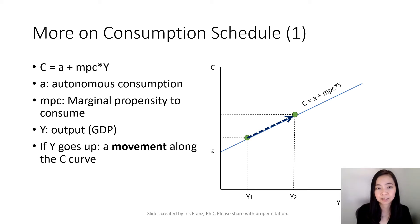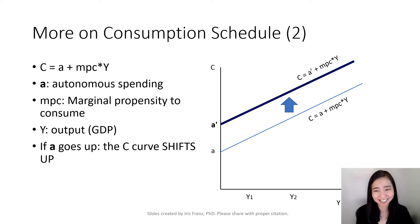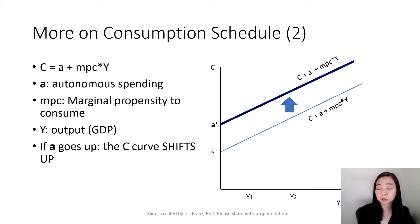So moving from, say, this point to that point, if our real GDP goes up. Suppose your autonomous spending goes up from A to A prime, where A prime is greater than A, then you are going to see a shift of the consumption schedule from this line to that thick line. So that will be a shift in the consumption schedule.